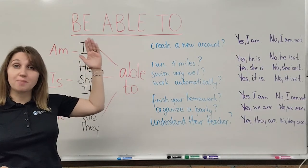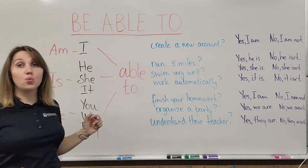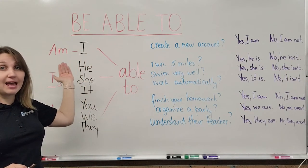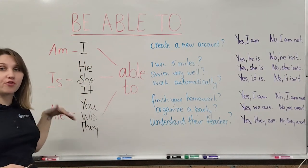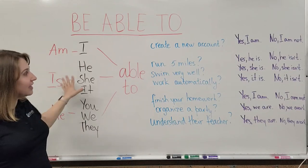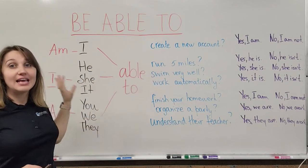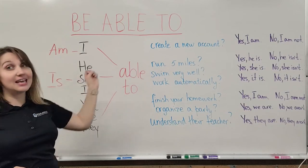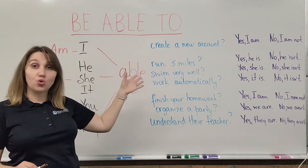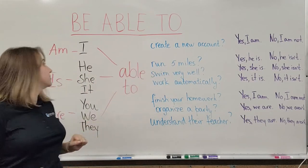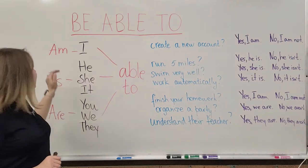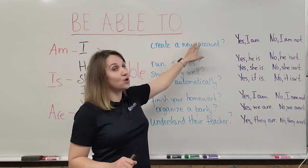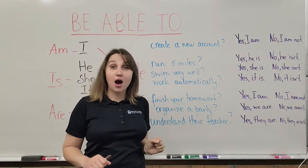In order to form a question with the modal form 'be able to,' you will move the part 'to be' — in the form of 'am,' 'is,' or 'are' — to the front. Let's look at some example sentences and read the questions and the possible short answers. The first question: 'Am I able to create a new account?'